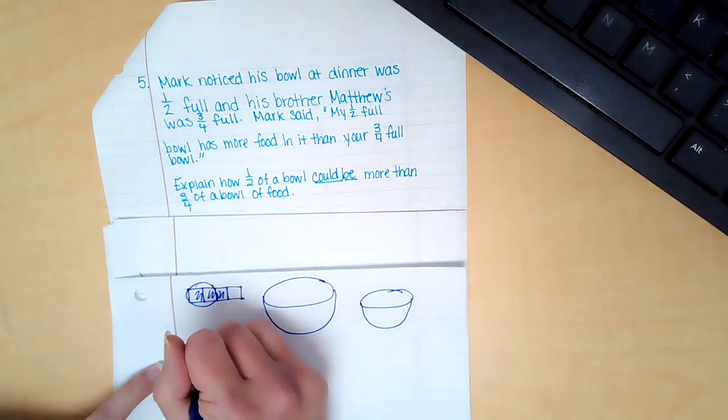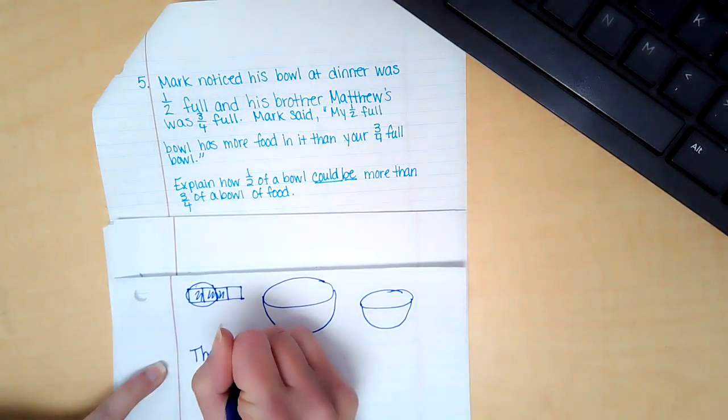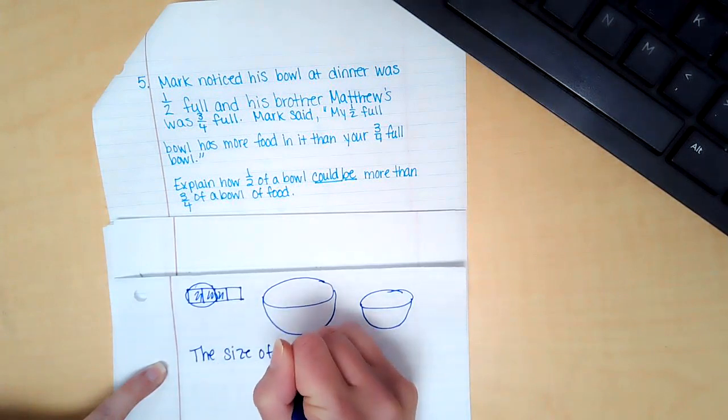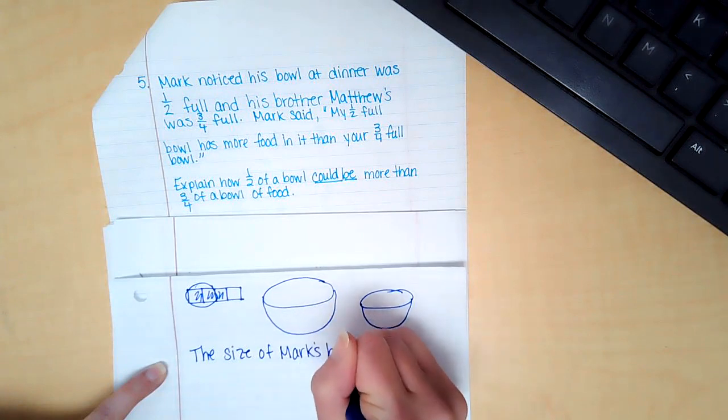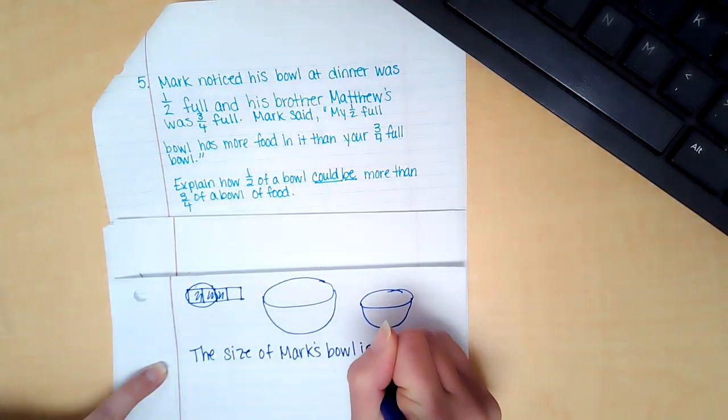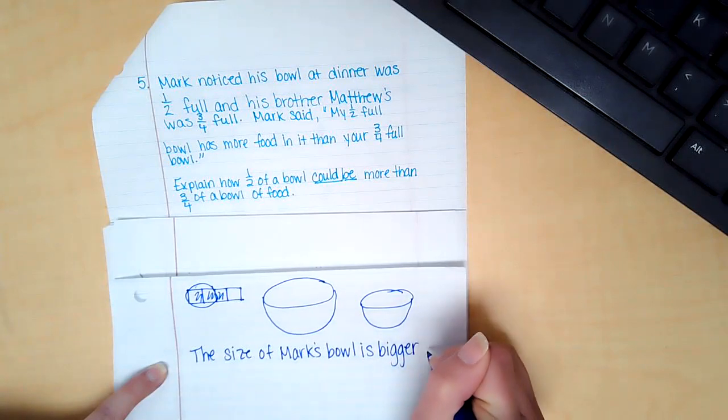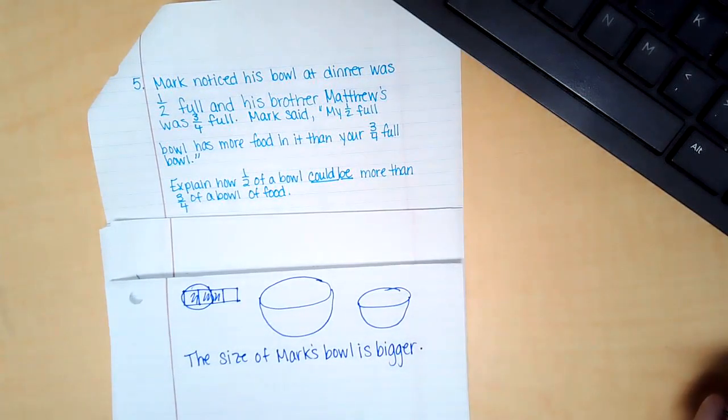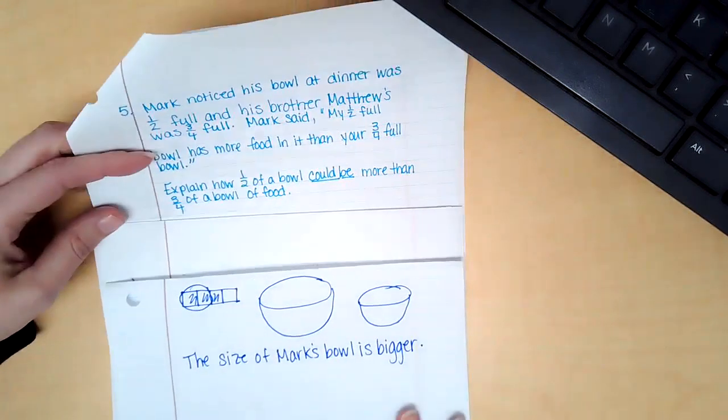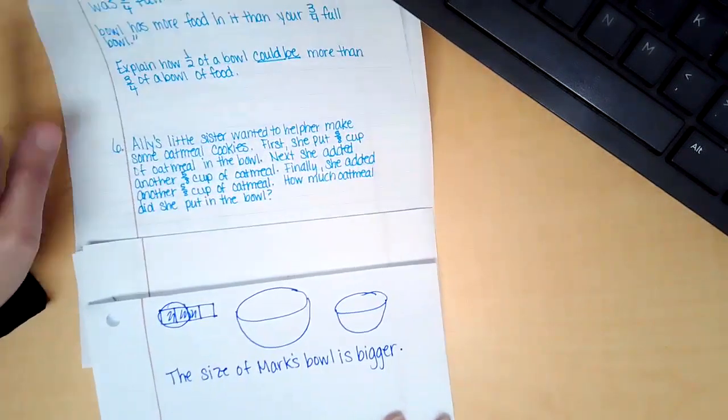So if I had to explain that, I would just say the size of Mark's bowl is bigger. It's obviously got to be bigger, because otherwise there's no way that one half could be more than three fourths. So that was kind of a logic it out kind of thing.